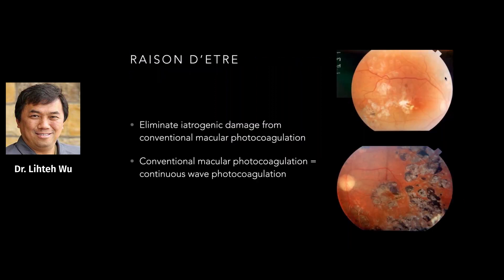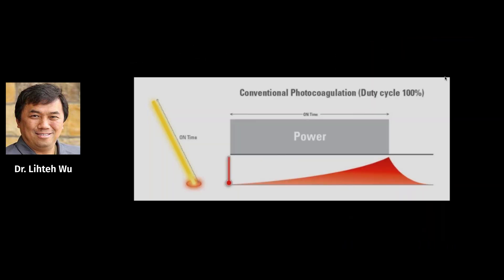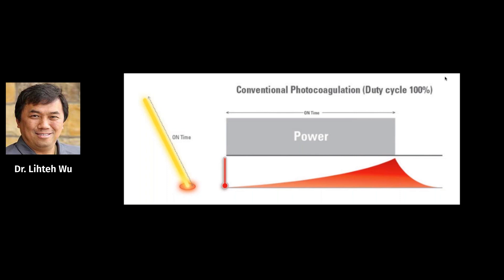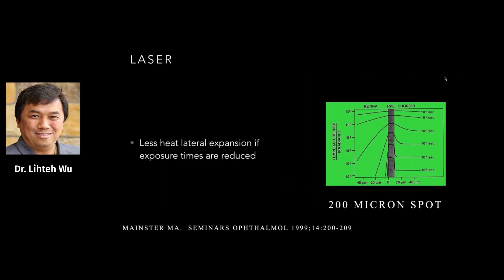So why do we use subliminal laser? The reason is to eliminate the iatrogenic damage from conventional macular photocoagulation, which is essentially the same as continuous wave photocoagulation. We already know from several decades of work that the power delivered is throughout the entire pulse of the laser selected — essentially a duty cycle of 100%. We know that our target is the RPE.